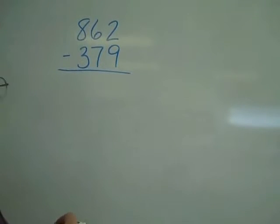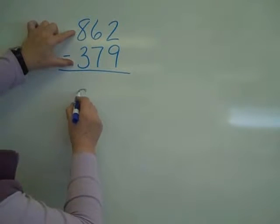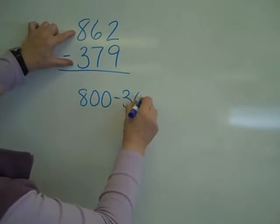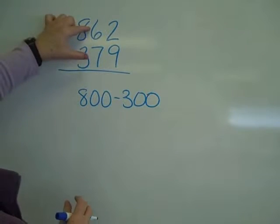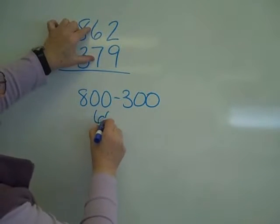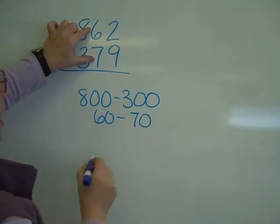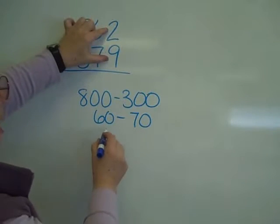Let's look at that same type of problem but with larger place values. This is 800 minus 300. This is 60 minus 70. This is 2 minus 9.